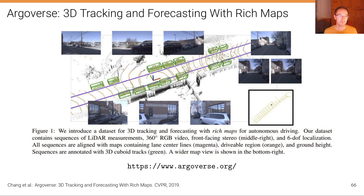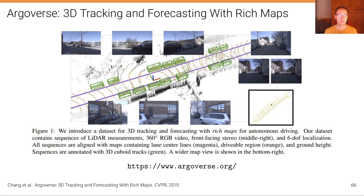Finally, I want to show you ARGOVERSE, a recent dataset for 3D tracking and forecasting with rich maps — meaning HD maps — that is publicly released for autonomous driving. The dataset contains sequences of LiDAR measurements and RGB video as well as accurate localization. It is nowadays frequently used for evaluating tracking and motion forecasting techniques. Here's the link to the website with leaderboards and more.